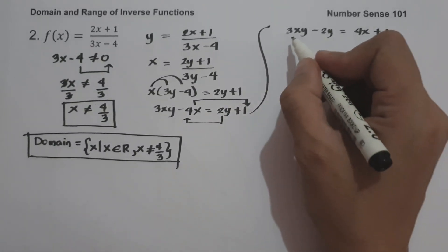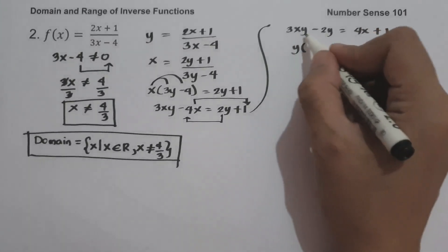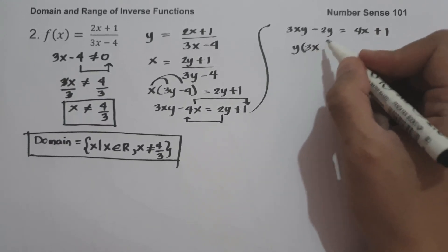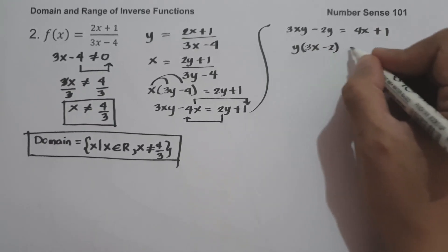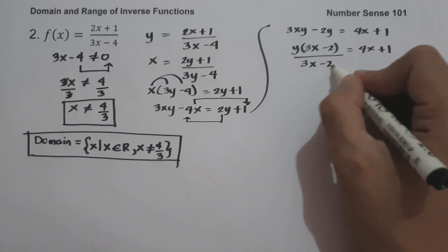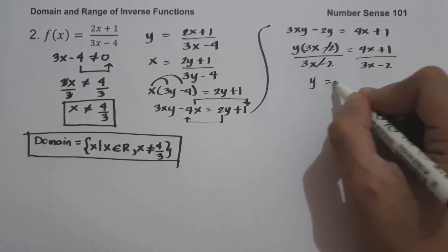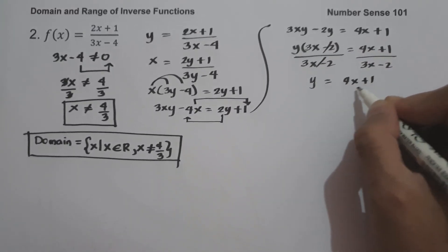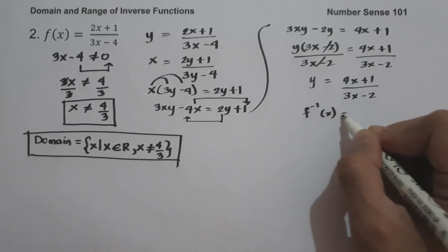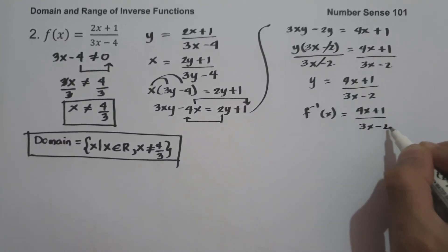The greatest common factor between 3xy and negative 2y is y. Factoring gives y times (3x minus 2) equals 4x plus 1. Dividing both sides by 3x minus 2, we get y equals 4x plus 1 all over 3x minus 2. This is the inverse of the given function.